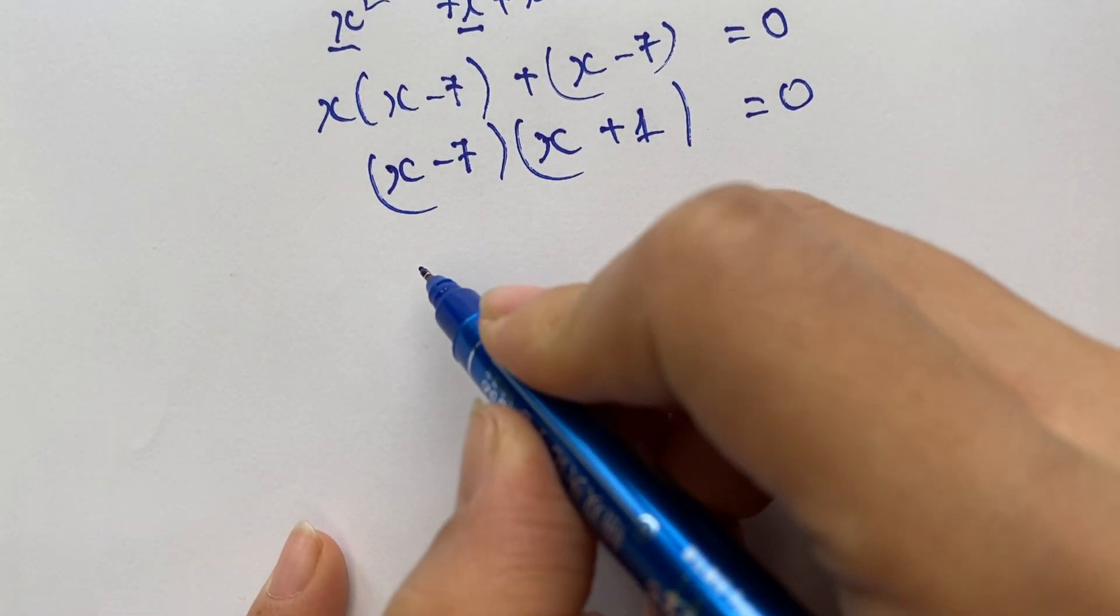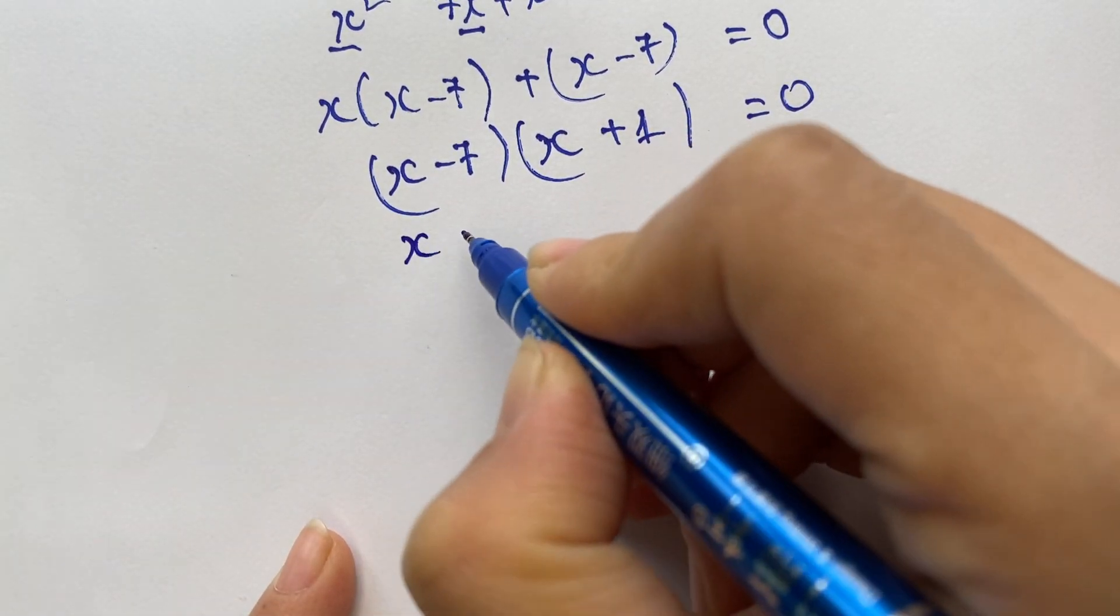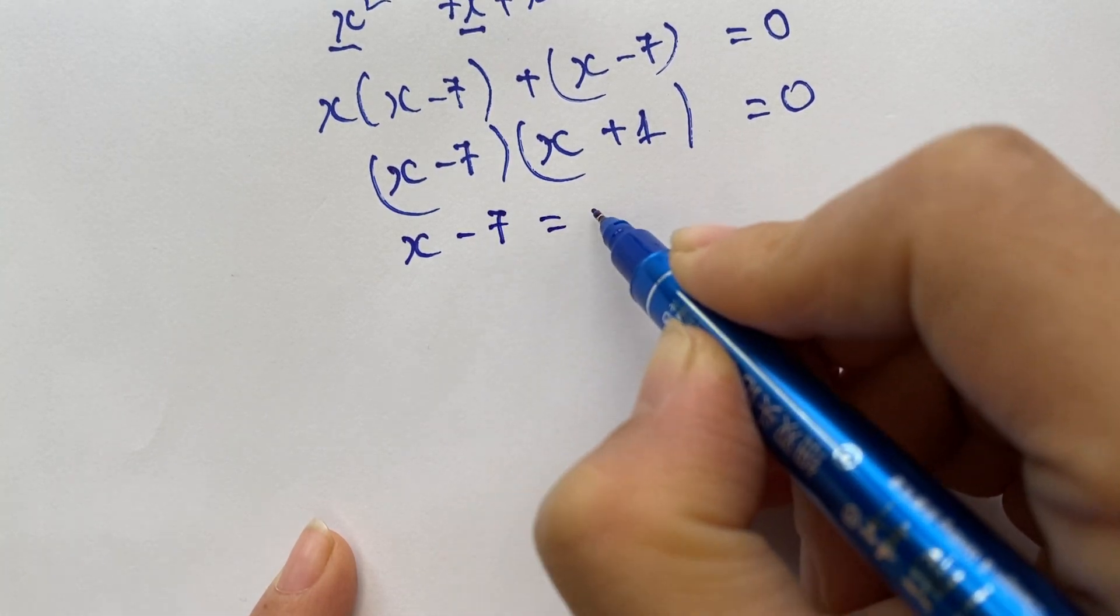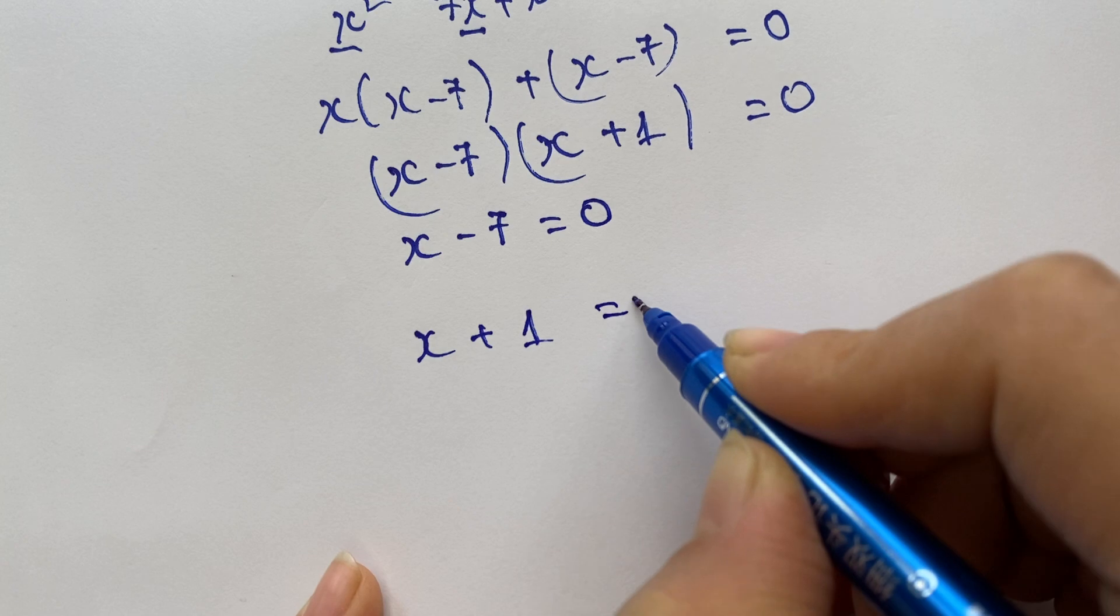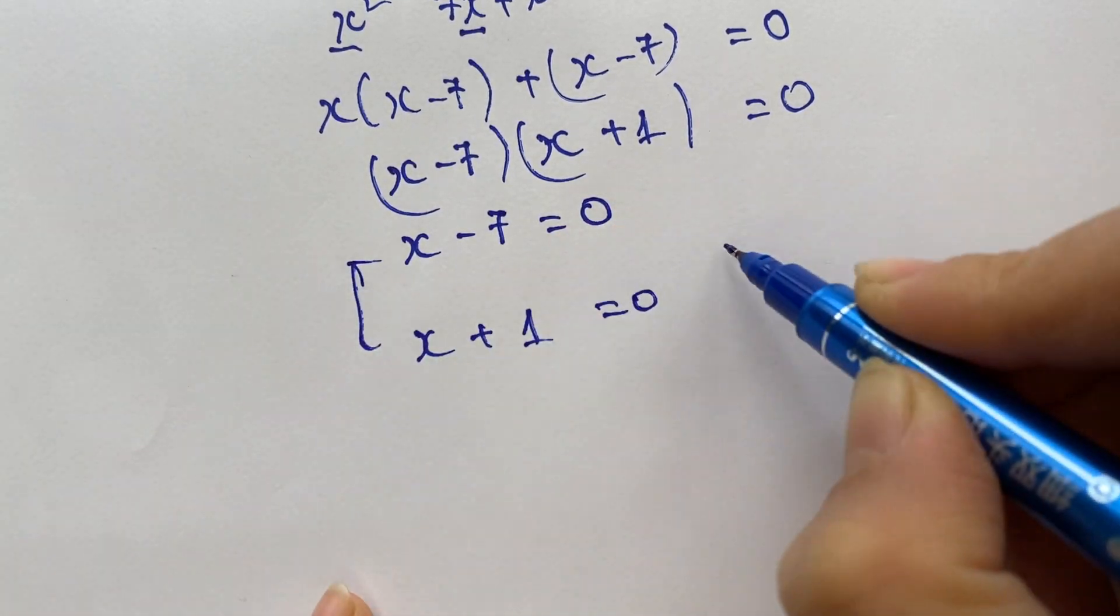We have two values of x. First, x minus 7 equals 0, and second, x plus 1 equals 0.